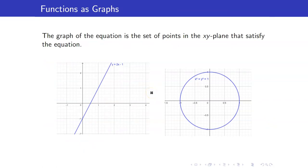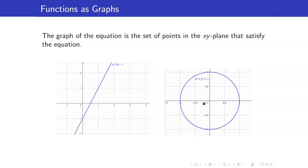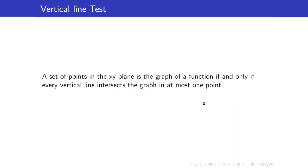Next, we want to test whether the graph of a given relation represents a function. Recall that the graph of an equation is the set of points in the xy-plane that satisfy the equation. To check if a given graph represents a function, we use the vertical line test. The vertical line test tells us that if we draw any vertical line, that vertical line must intersect the graph in at most one point. It's possible for the vertical line not to intersect the graph — that's okay — but when it does intersect, it must do so at exactly one point.